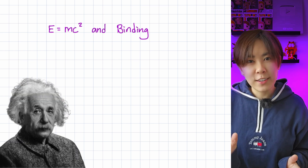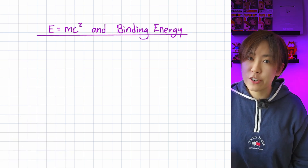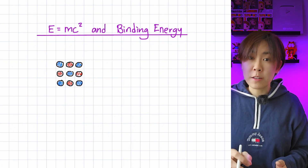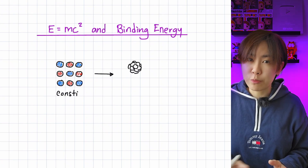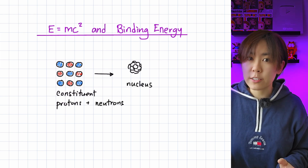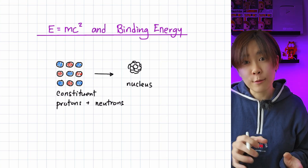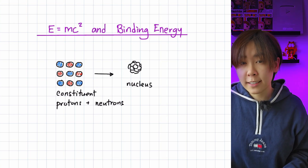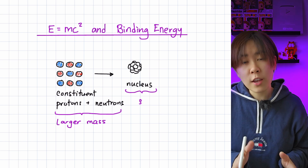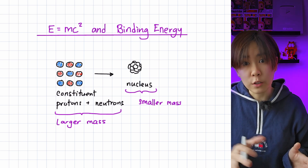How does Einstein's equation, E is mc squared, relate to the binding energy of a nucleus? Let's do a thought experiment to combine the individual protons and neutrons into one nucleus. What's interesting is that this process results in a loss of mass. You'll find that the individual protons and neutrons have a combined mass that is larger than the nucleus.